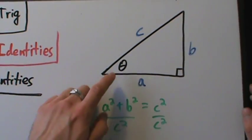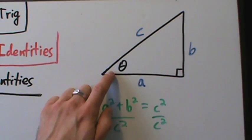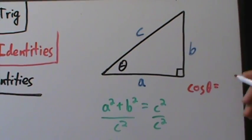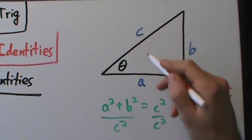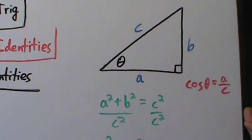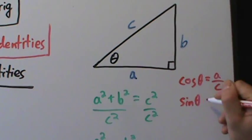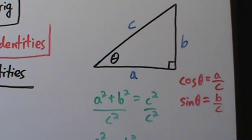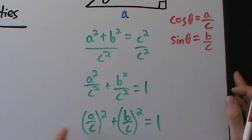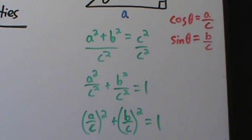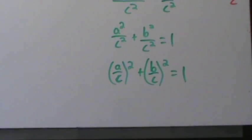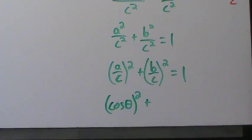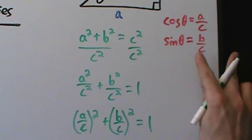If theta is the angle here and a is the adjacent side, b is the opposite, and c is the hypotenuse, then remember: the cosine of theta is a/c — adjacent over hypotenuse. And the sine of theta is the opposite side over the hypotenuse, which is b/c. That's exactly what we have here: a/c is the cosine of theta, b/c is the sine of theta. So we can replace a/c with cosine of theta and b/c with sine of theta — make sure to keep the parentheses.